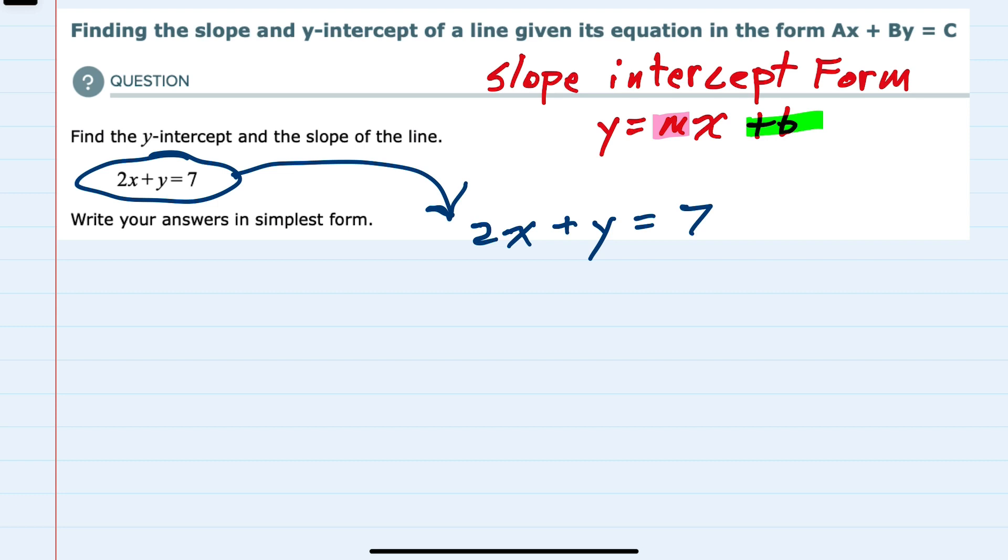Since here we have y on the left hand side, I'm going to isolate it by moving this 2x over to the other side of the equation.